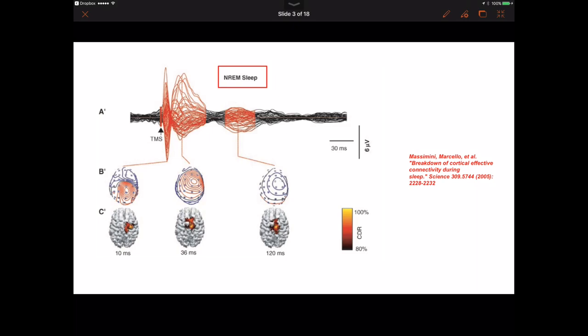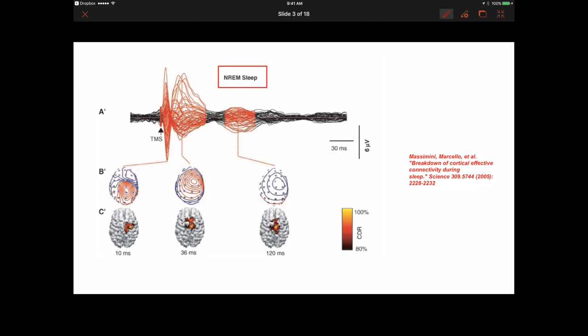And here in the next slide, you see what happens during non-REM sleep, that sleep in which you are deeply unconscious. There is no activity going on in your mind. You are basically gone from this world. When you do the transmagnetic stimulation in this particular state, you can see that the signal remains local. It's not going anywhere because there is a decoupling of brain areas. Brain areas that are connected to each other during conscious states are uncoupled during unconscious states.